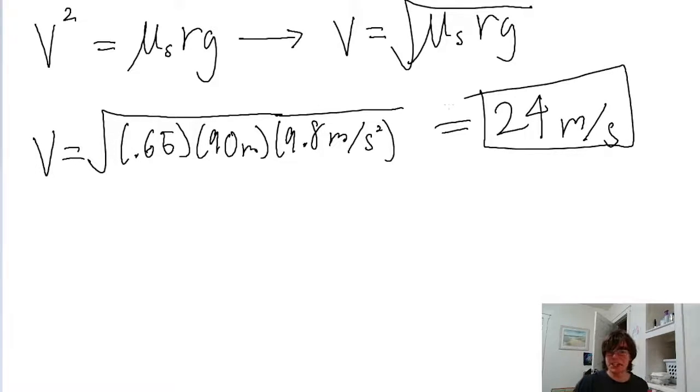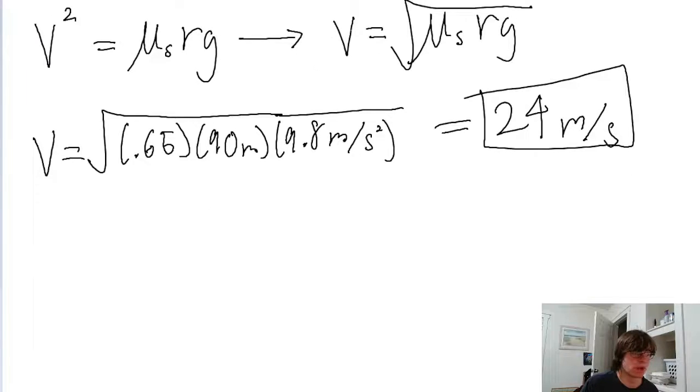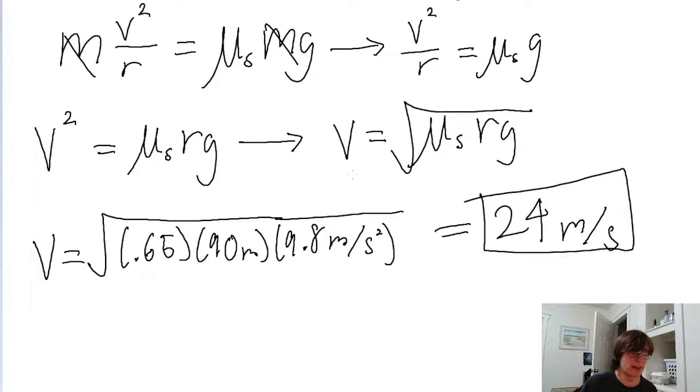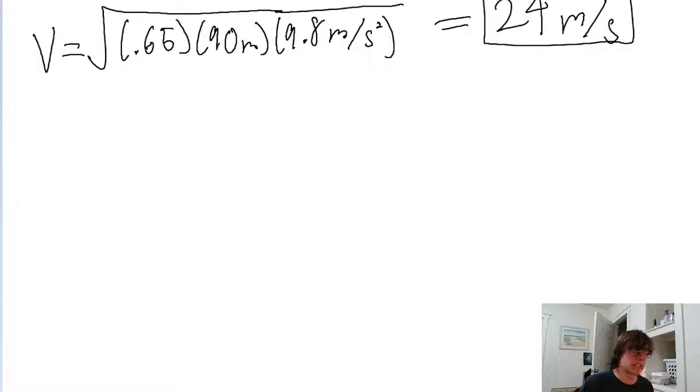So that is the answer to the first part of the problem. But the problem also asks, is this result independent of the mass of the car? And well, we can see from our final equation that we used, it does not have an M in it. That final speed does not have anything to do with the mass of the car. So the result is independent of the car's mass.